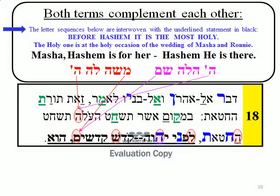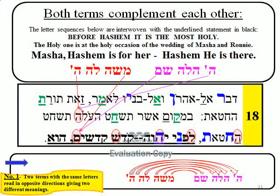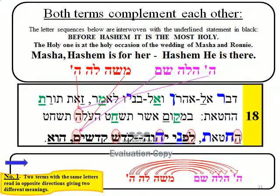The letter sequences below are interwoven with the underlined statement in black: 'Before Hashem, it is the most holy.' The Holy One is at the holy occasion of the wedding of Masha and Roni. Note that this is the first occasion where two terms with the same letters are read in opposite directions, giving two different but complementary meanings. We have several or more such occasions throughout the presentation.